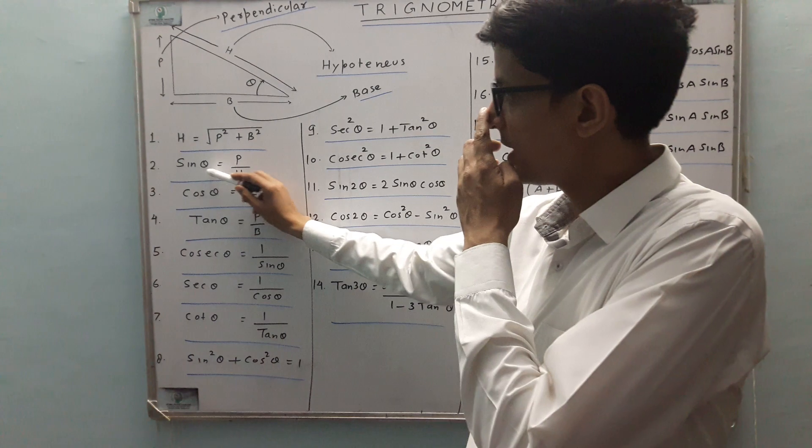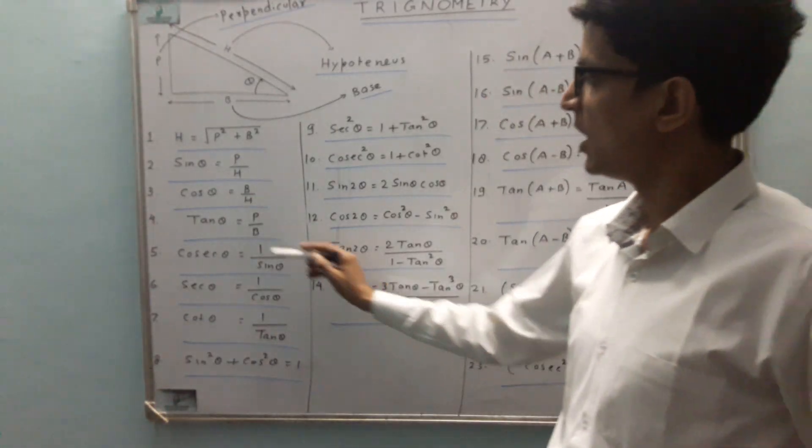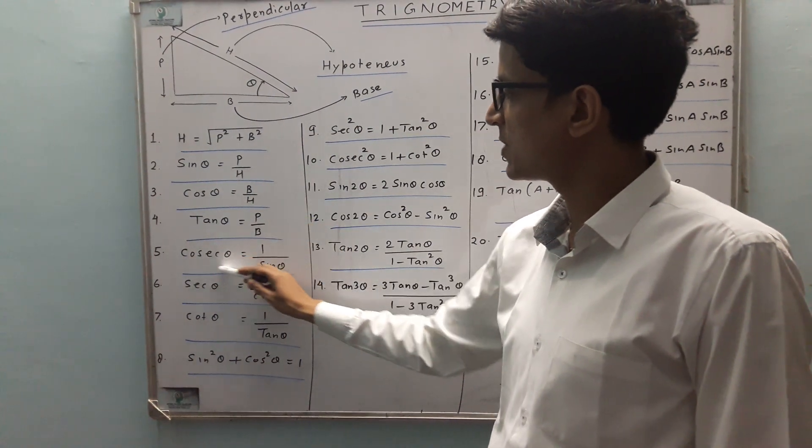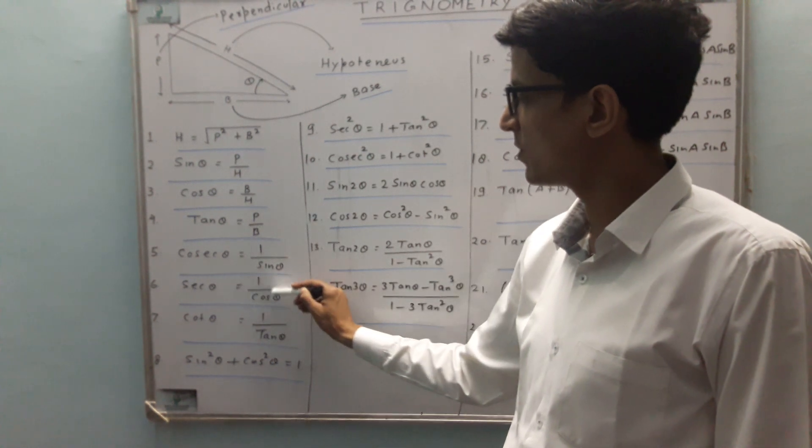The second result is sin theta is equal to p upon h. Third is cos theta is equal to b by h. Fourth is tan theta is equal to p upon b. Fifth is cosec theta is equal to 1 upon sin theta.